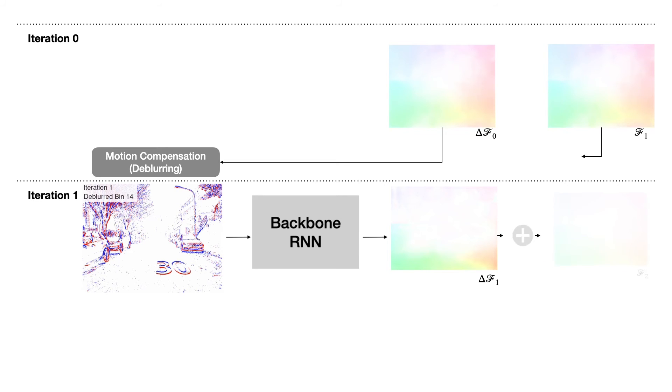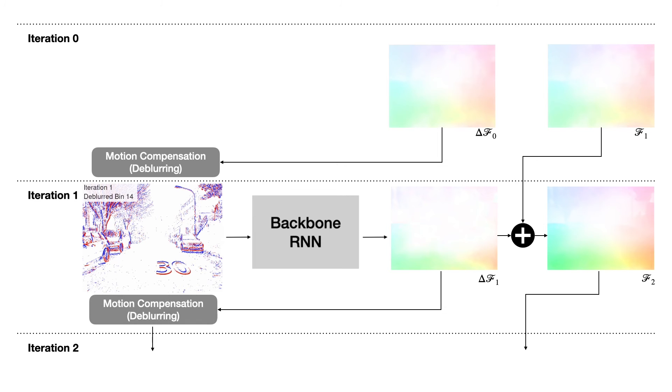We then add this new residual flow to the total flow prediction F1 from the previous iteration to arrive at F2, the total flow prediction for this iteration. From this point, a new iteration of refinement could be started again.